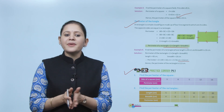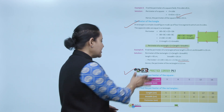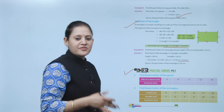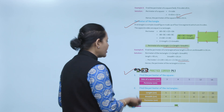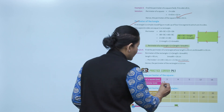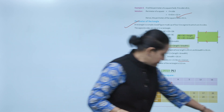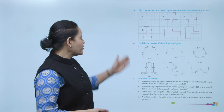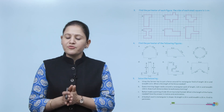Practice corner 14.1: find the perimeter of a square where the side is given as 3 centimeters. Perimeter equals 4 into side, 4 into 3 equals 12 centimeters. Some more questions are given, so you have to practice them all.